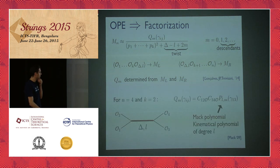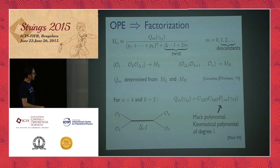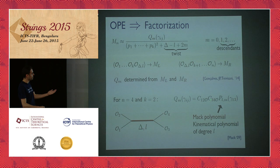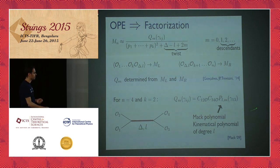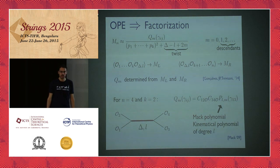For the simplest case of the four-point function, the residue is just a product of the two OPE coefficients times some specific kinematical polynomial whose degree is fixed by the spin of the exchanged operator — very close analogy with flat-space scattering amplitudes.